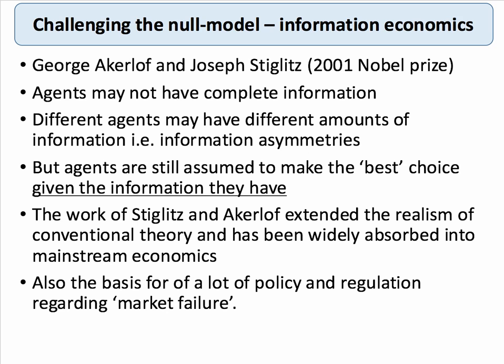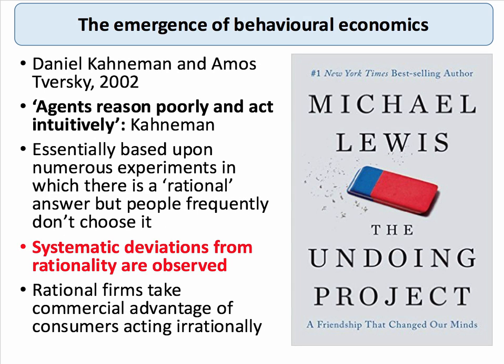Information economics challenged the idea of complete information, but it was the work of psychologists — notably Daniel Kahneman and the late Amos Tversky, who received the Nobel Prize in economics a year later — that really changed the rules of the game. It was a groundbreaking change in economics. This is a brilliant quote from Danny Kahneman: 'Agents reason poorly and act intuitively.'